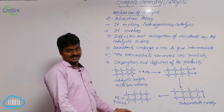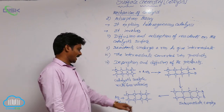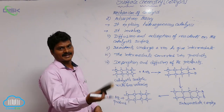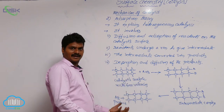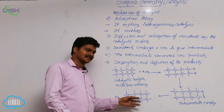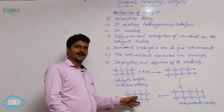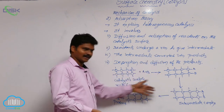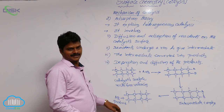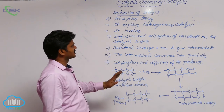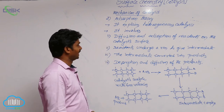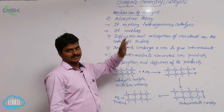The catalyst is again having free valences, so it can now catalyze more reactants. Already some molecules have been converted into products. Some more reactant molecules reach this surface, and they also undergo similar reactions and finally give products. This is the mechanism of heterogeneous catalysis explained by adsorption theory.